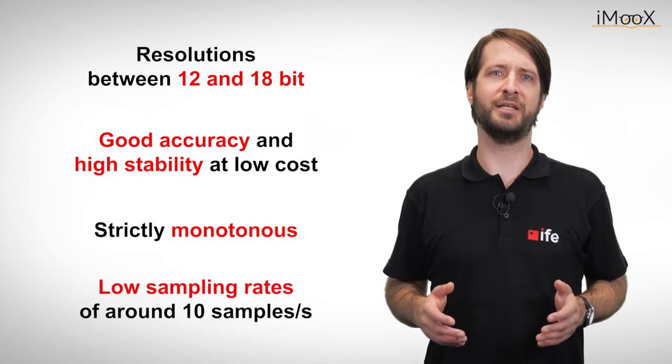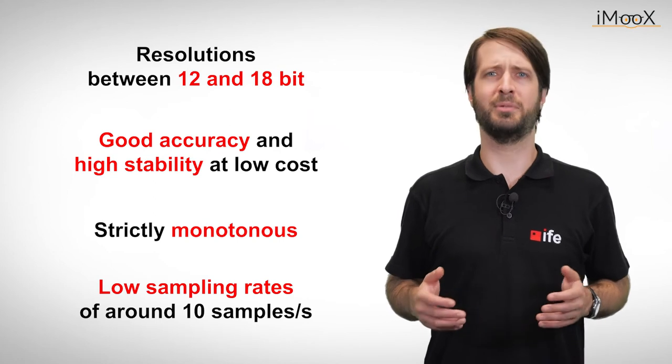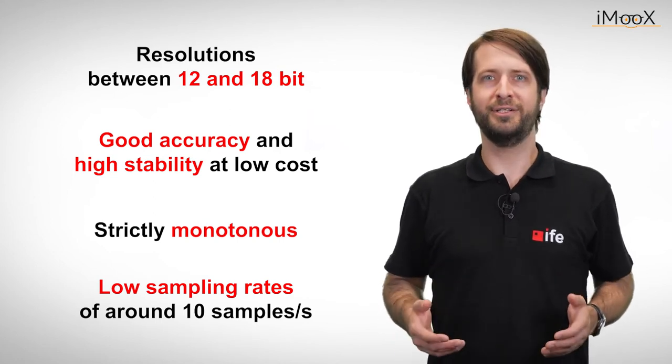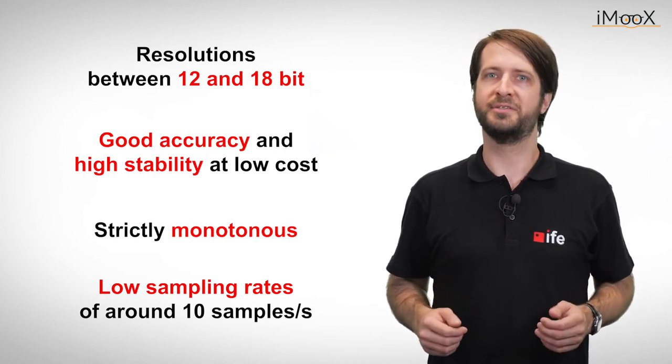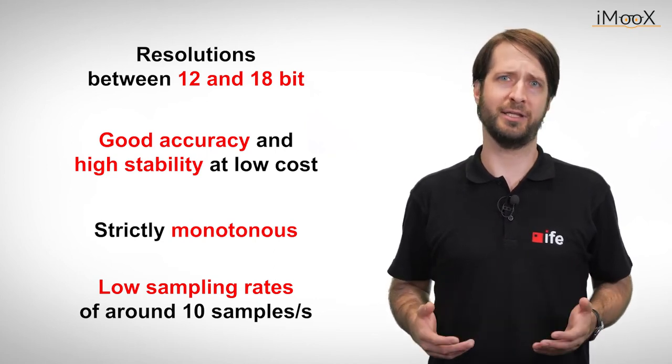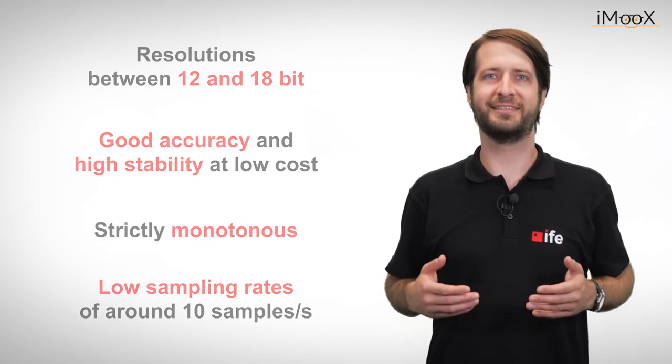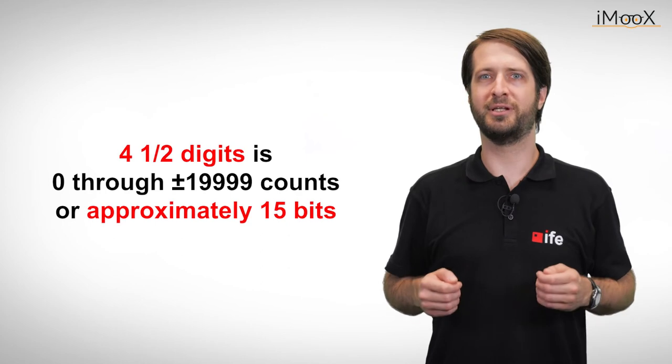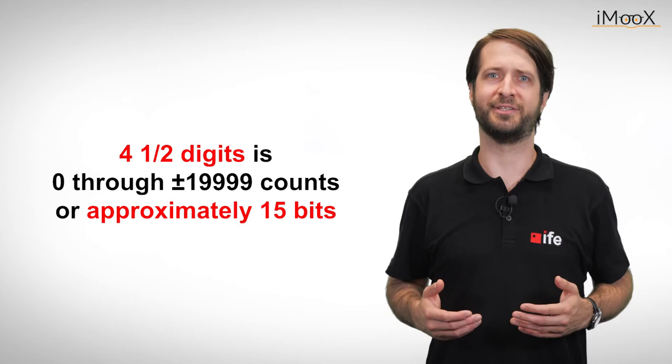Unfortunately, the sampling rates are very low, often in the ranges of about 10 samples per second. However, there are applications where low sampling rates are not a problem, such as temperature measurement applications. This type of ADC is also used extensively in precision digital multimeters, where their high resolution is often measured in displayed digits.